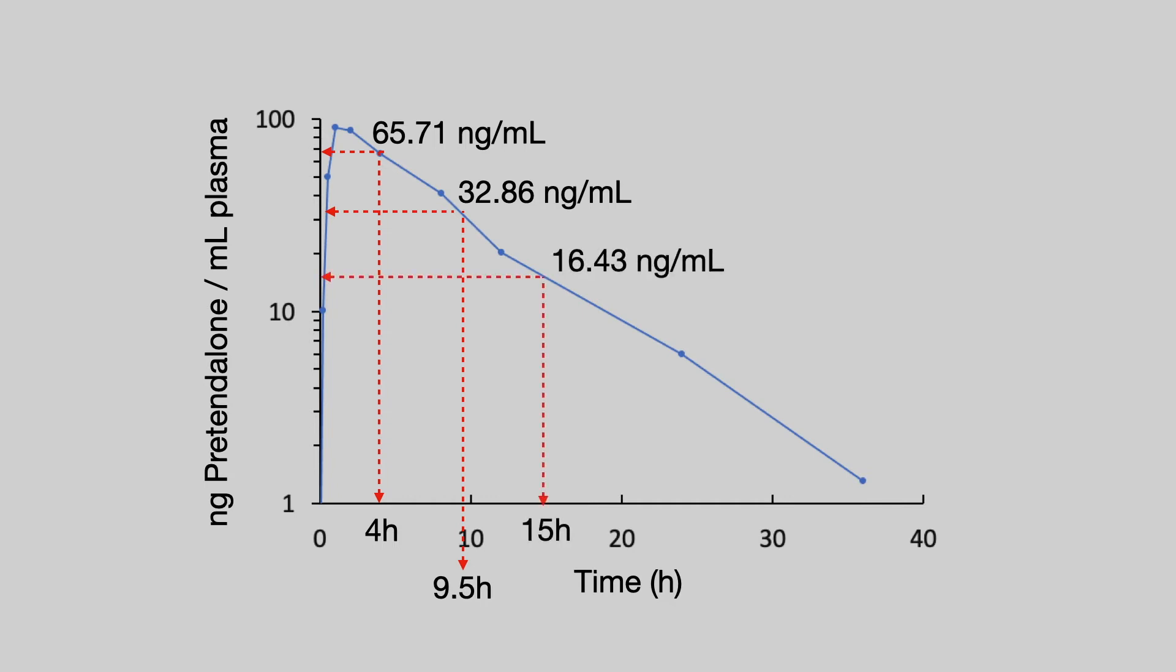At 32.86 nanograms per ml that coincides with 9.5 hours. Half that drug concentration, 16.43 nanograms per ml coincides with 15 hours. Now you can get the time points simply by using a ruler on the plot and lining things up or alternatively you can use the exponential equation shown here. Either way you can see that the drug concentration is halving every 5.5 hours. And so using the plot the half-life equals 5.5 hours.